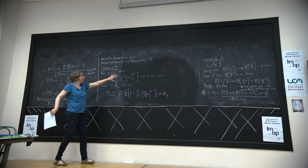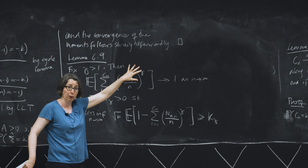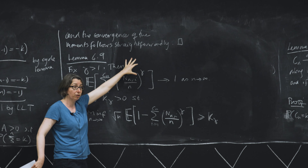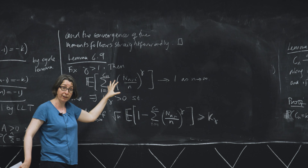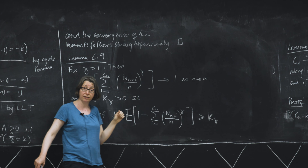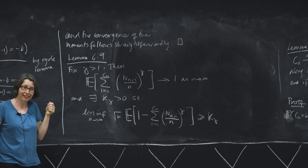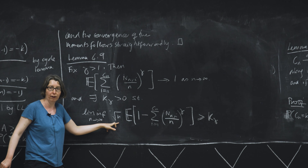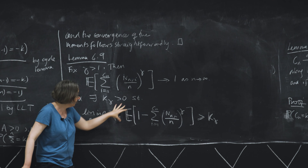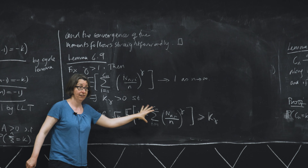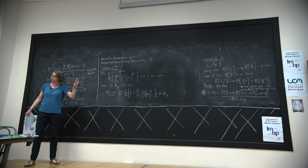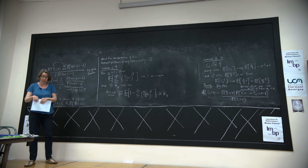To prove this: by Skorohod's representation theorem, there exists a probability space on which the convergence in distribution in Theorem 4.12 holds almost surely. Work on this probability space. On it, the height process H_N(⌊Nt⌋) · σ/(2√N) converges almost surely to (2/σ) times the normalized Brownian excursion e. We then use the correspondence established in the previous lecture between graph distance in the tree and the height process to conclude convergence of the rescaled trees to the Brownian CRT.